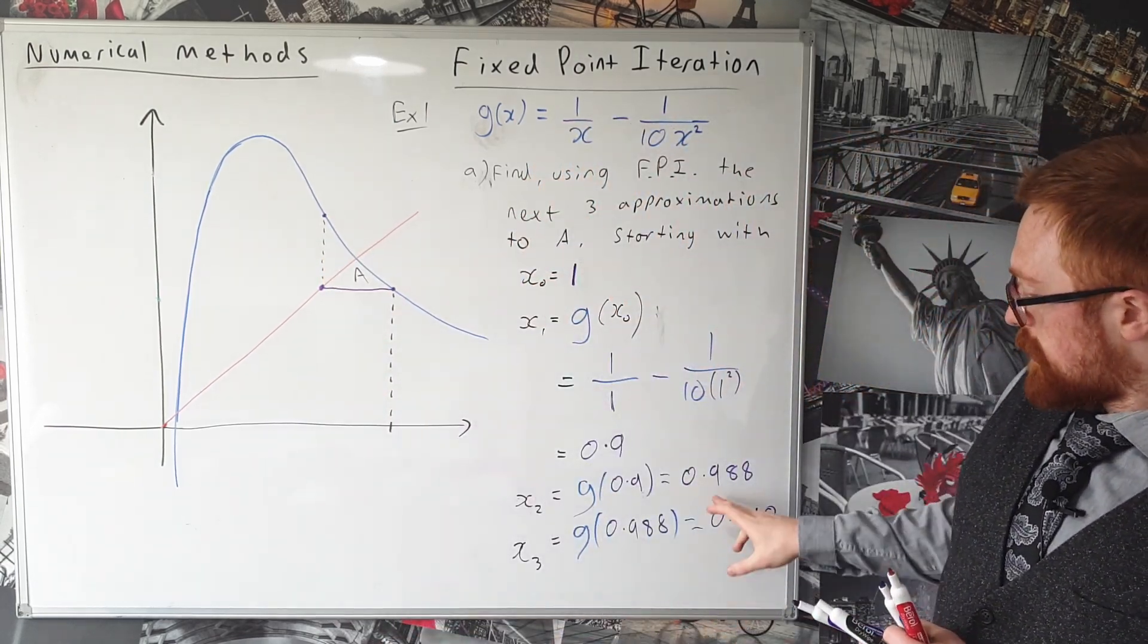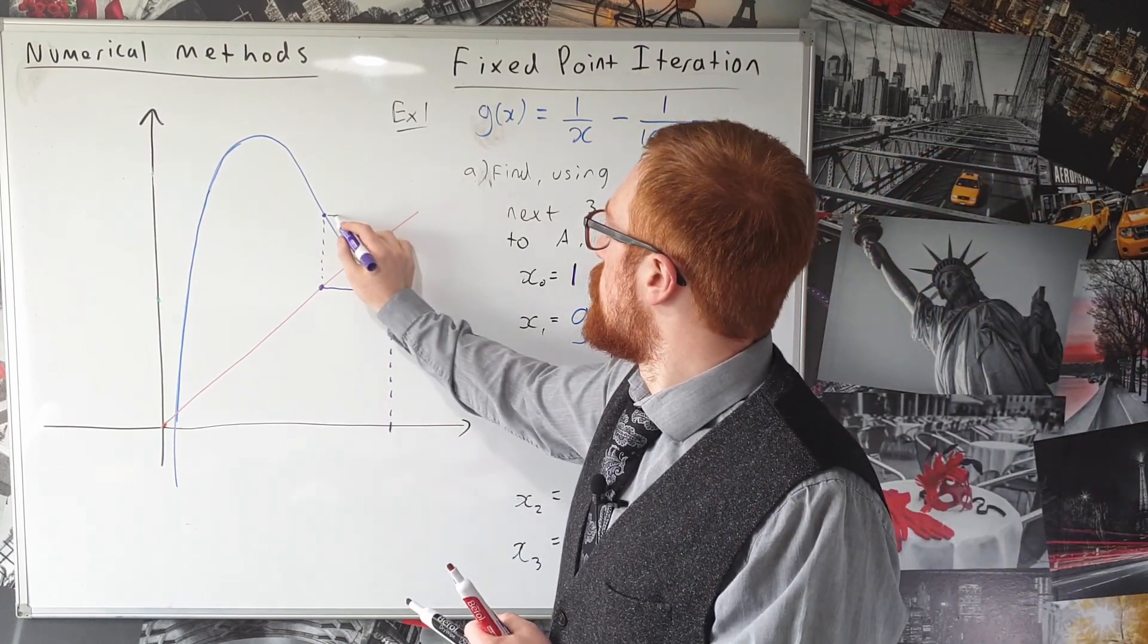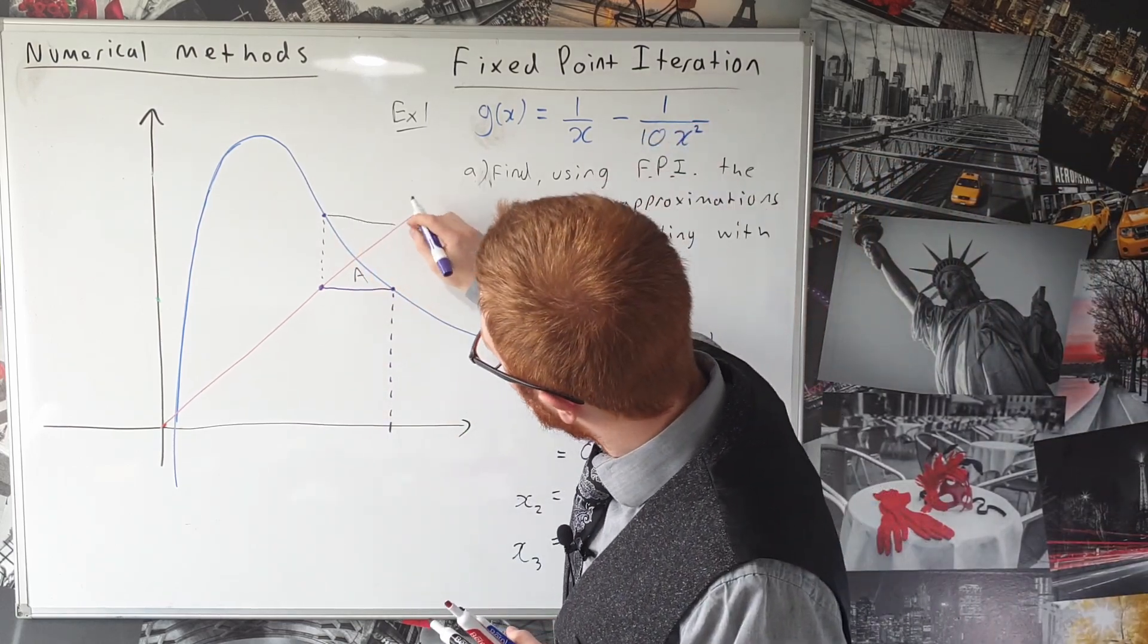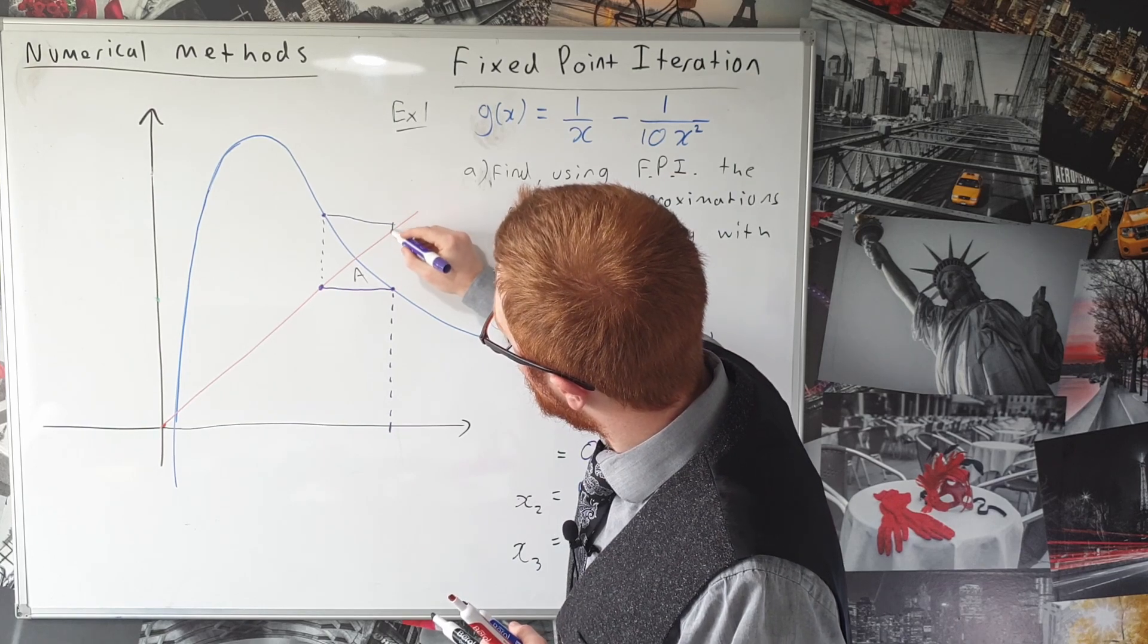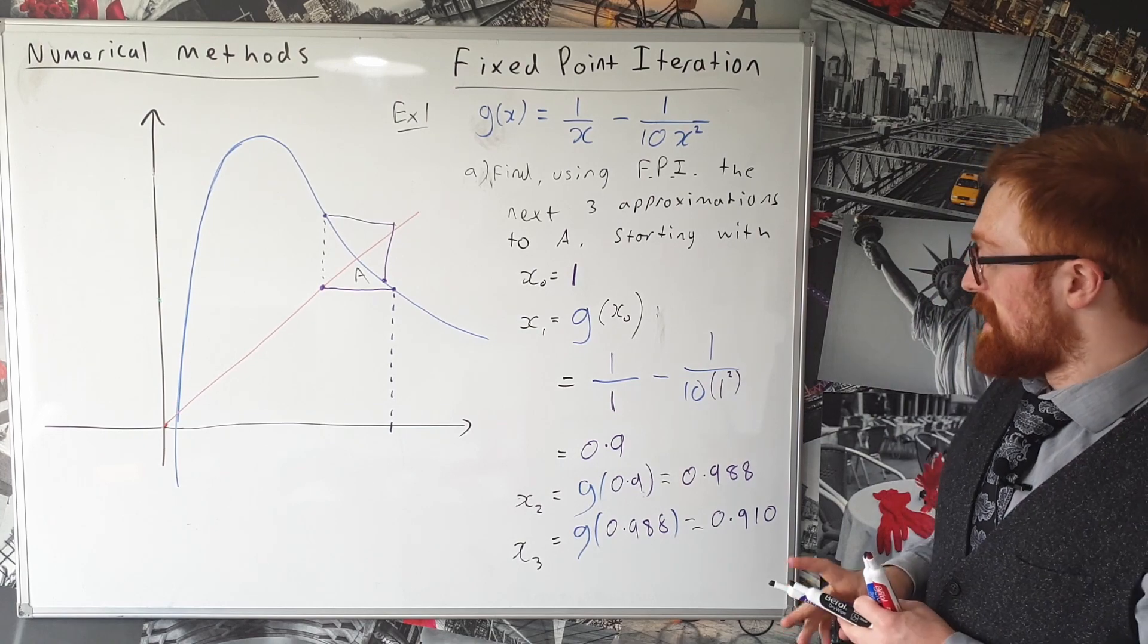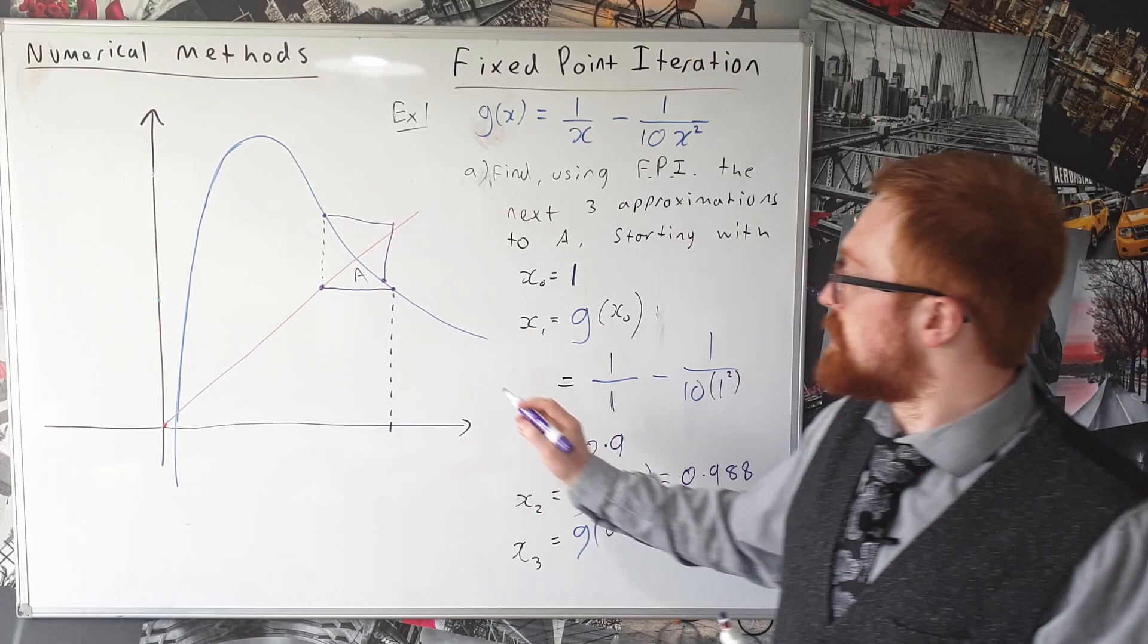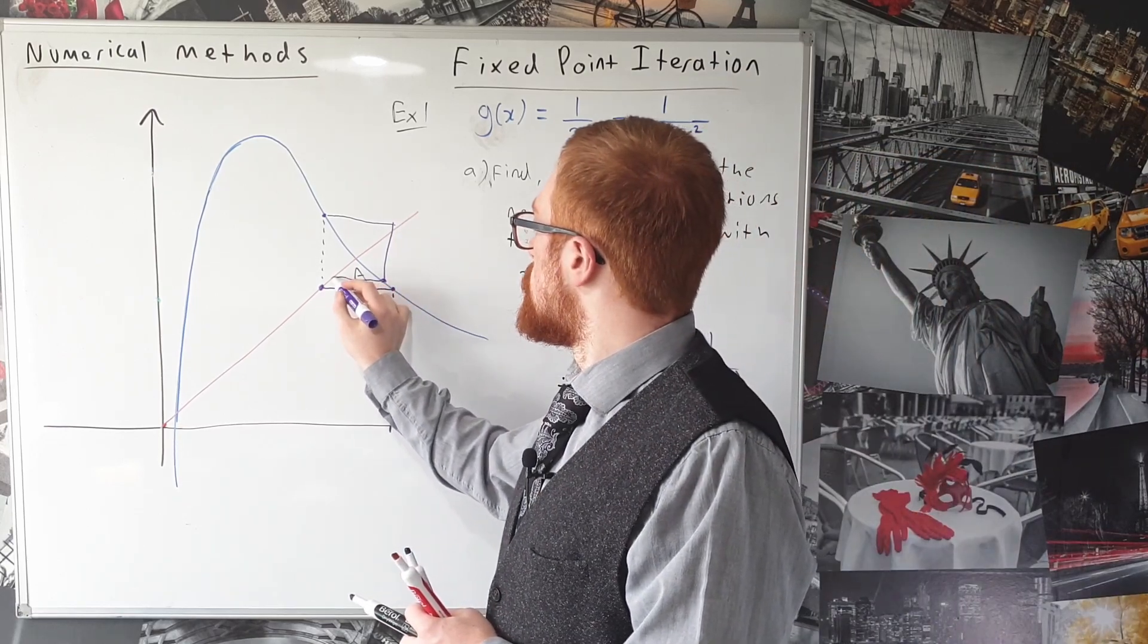And then our next approximation is 0.988 so it's just a little bit to the left of 1 which matches what we get on our diagram. It's a little bit to the left of 1. And then our final approximation in this one was 0.910 which is here.